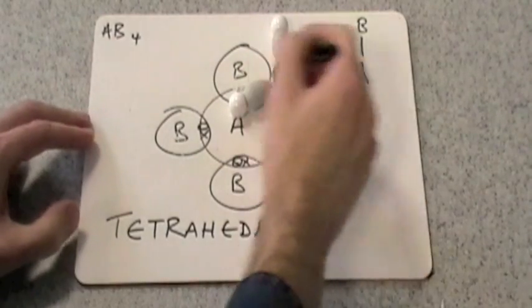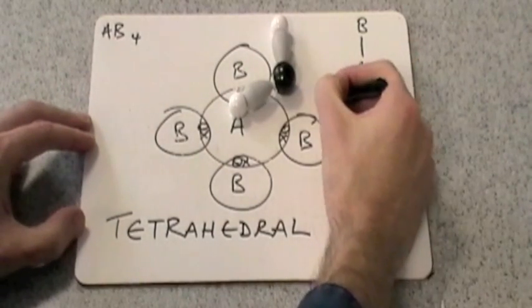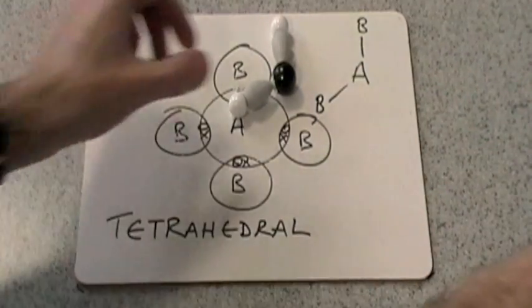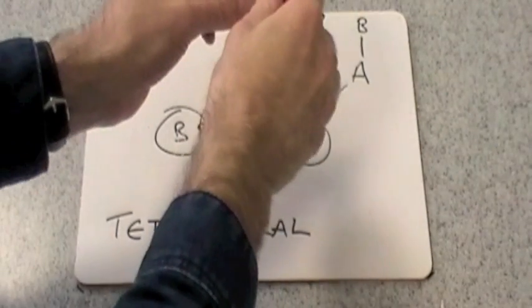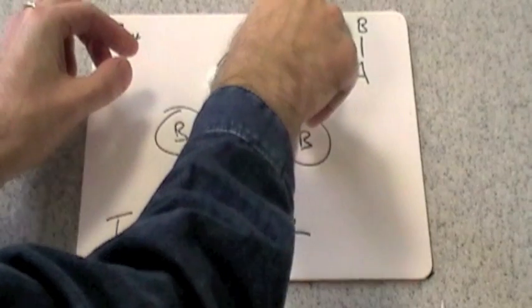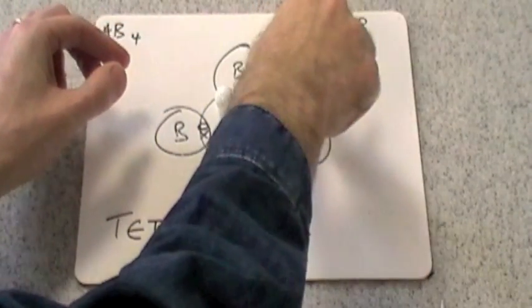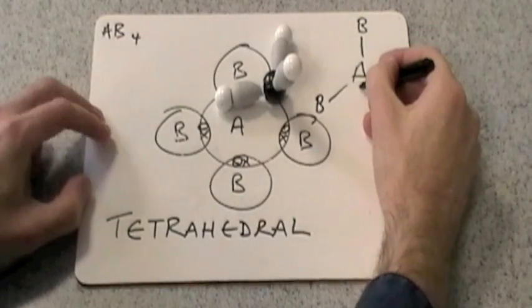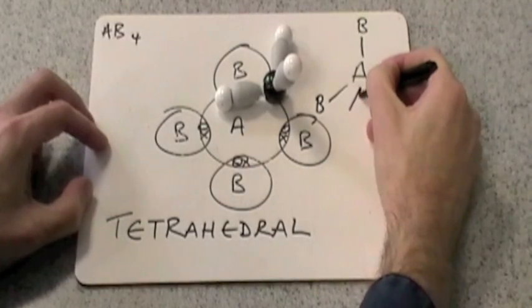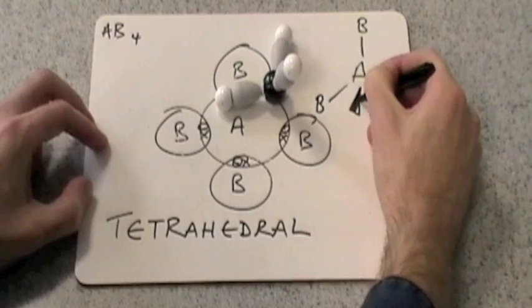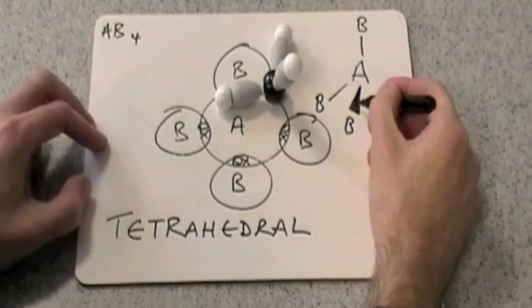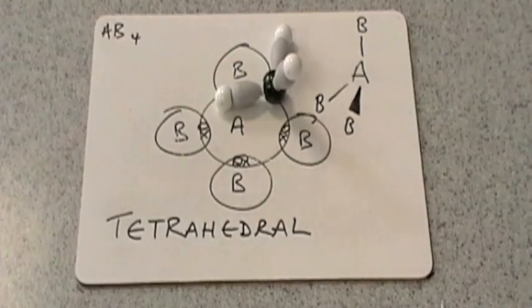Now if we attach this bond, that's actually sticking out of the board. And we show that as a solid wedge. So that bond there is sticking out of the plane.